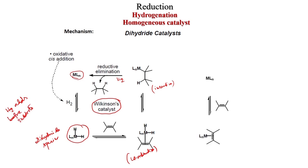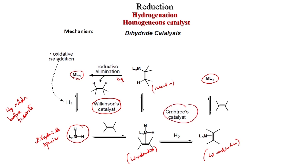In the case of Crabtree-type catalysis, the metal-ligand complex MLn first binds with the olefin — coordination happens first, then hydrogen comes to generate the dihydride via oxidative addition of H2. This is followed in Crabtree's catalyst. Then migratory insertion happens, followed by reductive elimination to give the alkene product and regenerate the metal-ligand complex. The key difference: in Crabtree's catalyst, substrate adds before hydrogen.